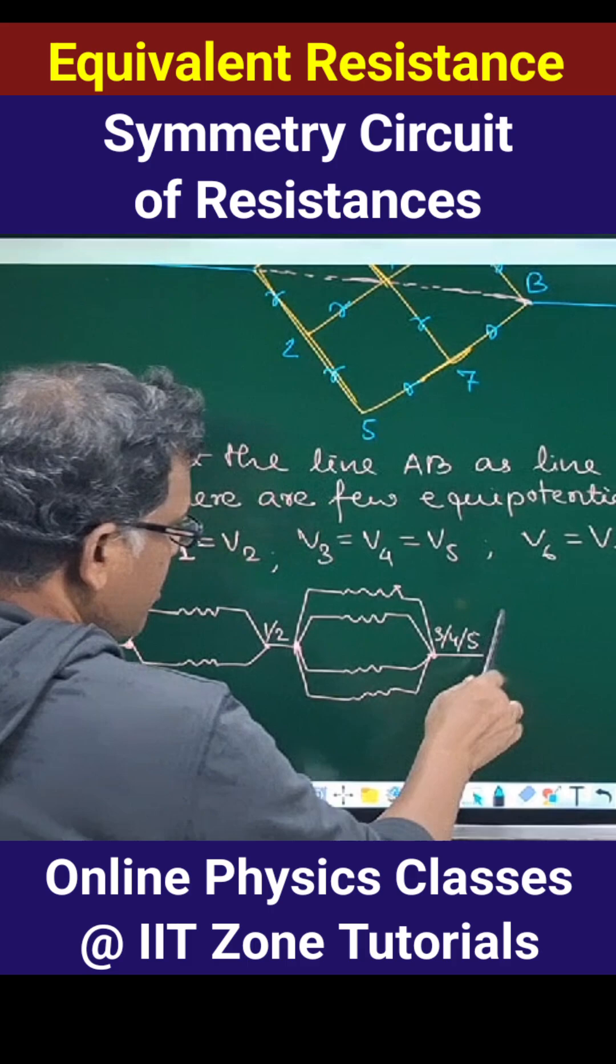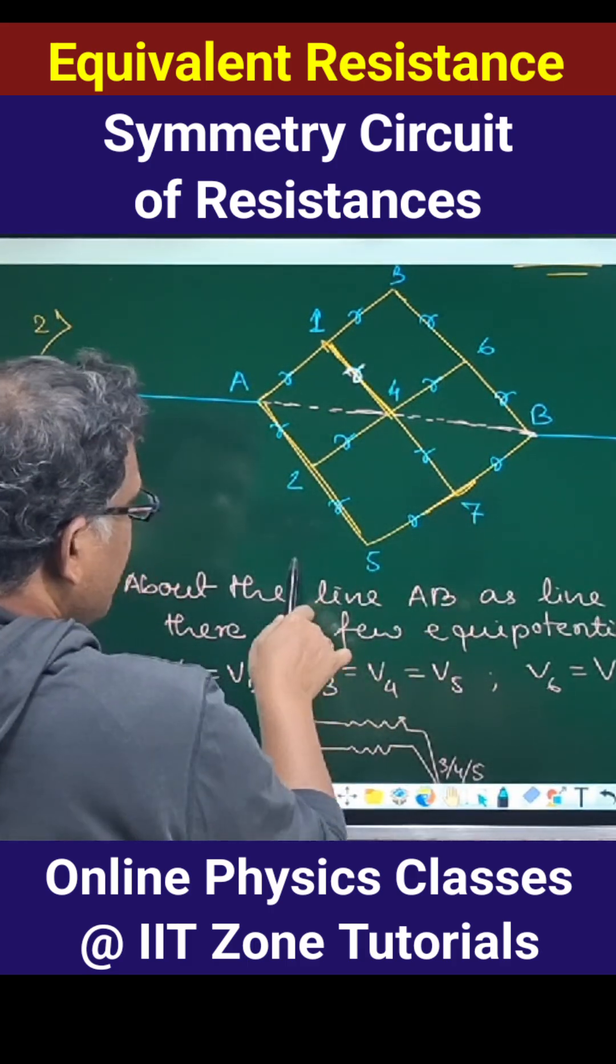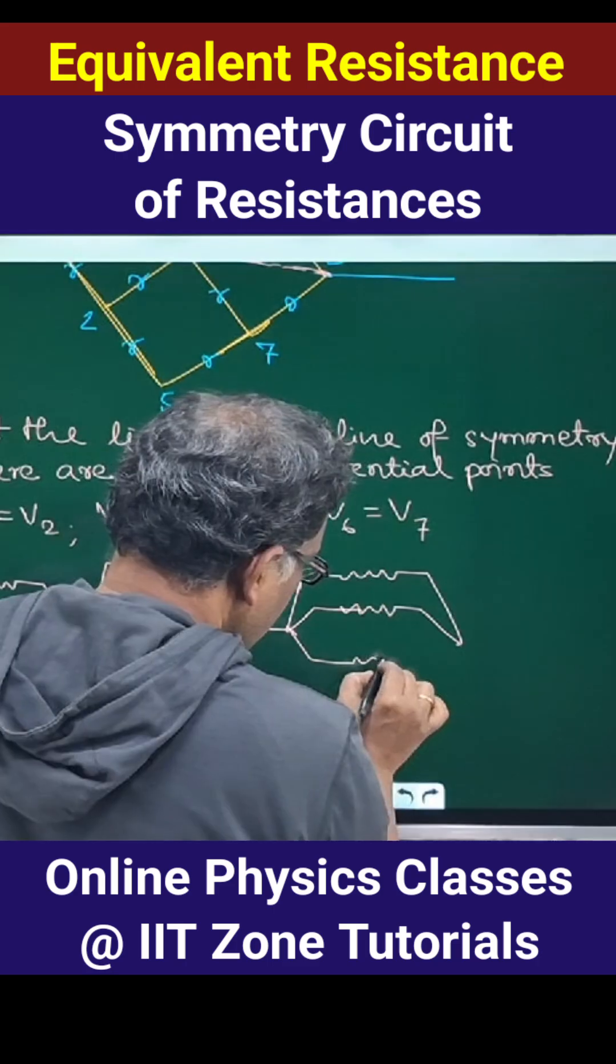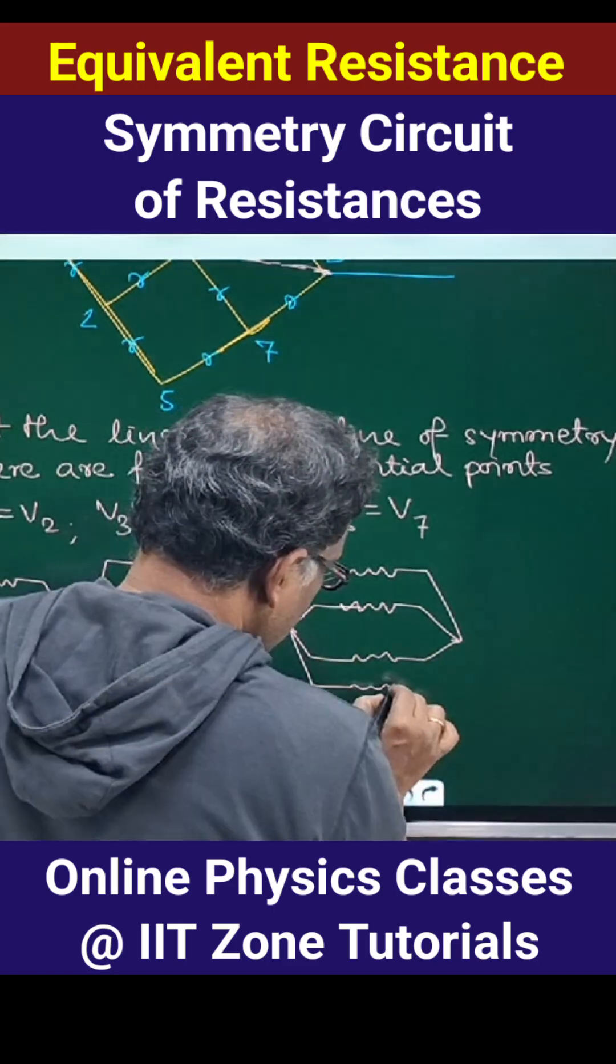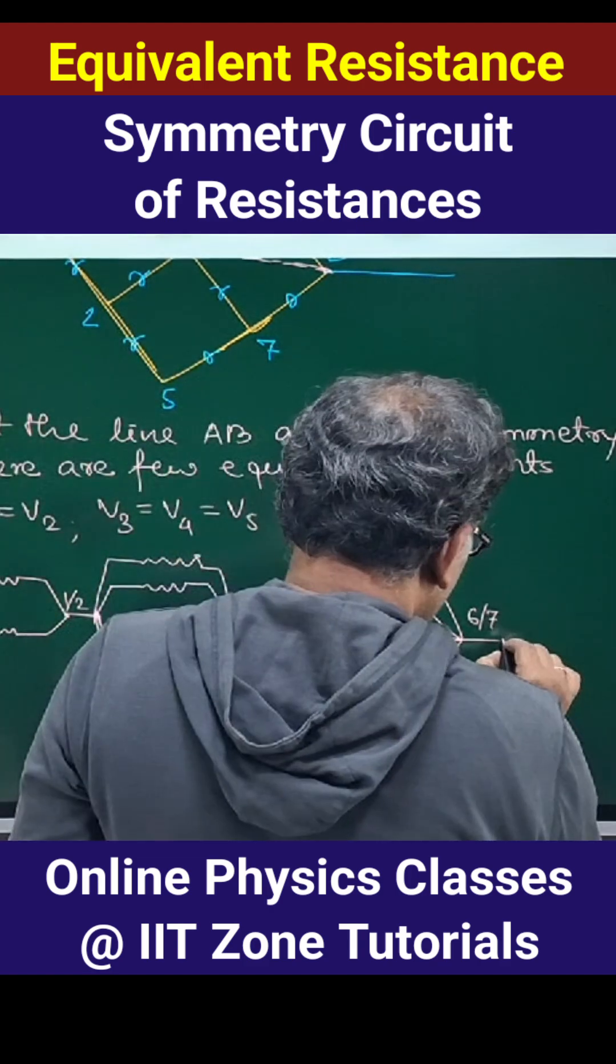Then from the junction of 3, 4, 5, again four connections going to 6 and 7. So this is going to 6, 7. And then from 6, 7 we are having two connections.